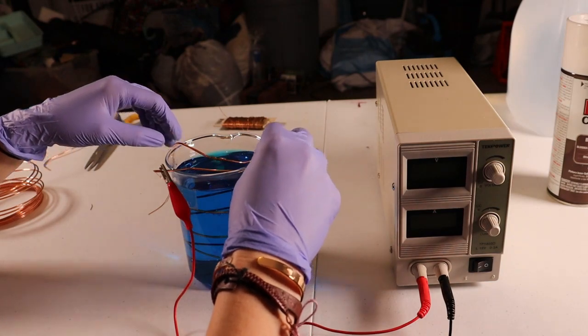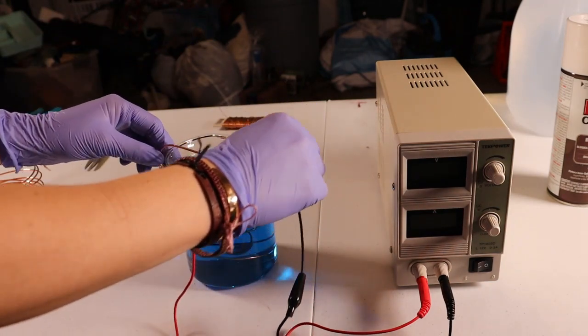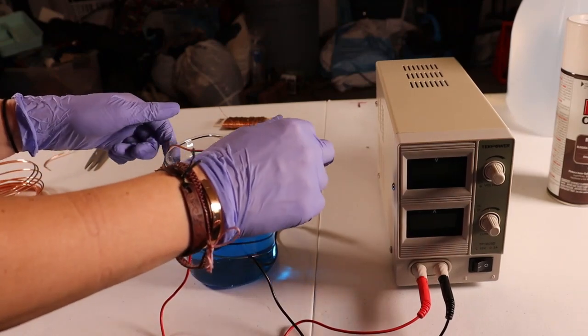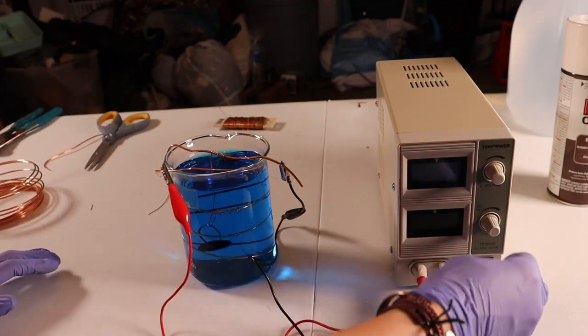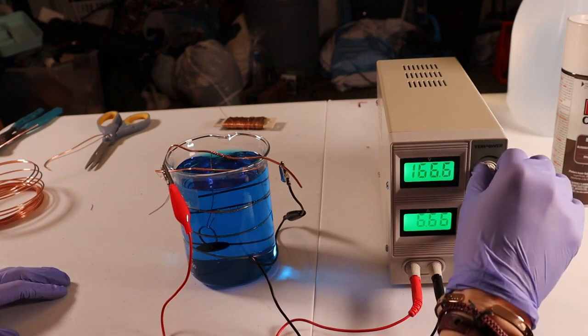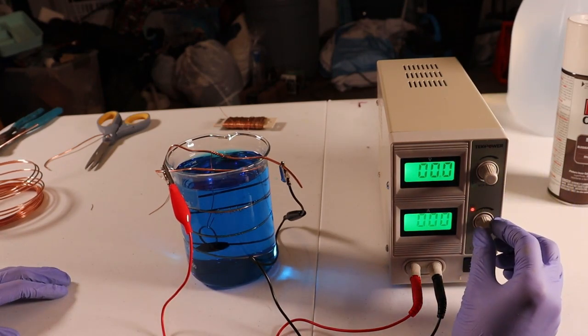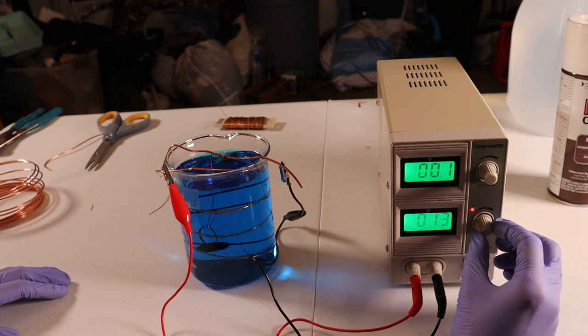Okay, place it into the solution, turn your rectifier on, make sure the bus bar is not touching the coil, and you want to make sure both knobs are turned to the left, and slightly turn that knob at the top until you see that red light, the CC light come on.